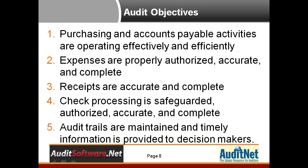First off, I had a grouping of scripts related to whether or not operations were efficient and effective — things like are we taking terms properly. Another grouping covers whether or not expenses are authorized and accurate — maybe we're playing around with approval limits to get things approved. Receipts being accurate and complete is a bit more of an inventory processing concern, but we threw that in there as well.